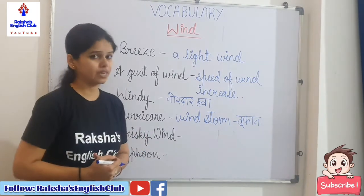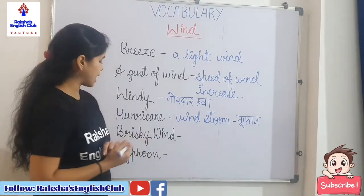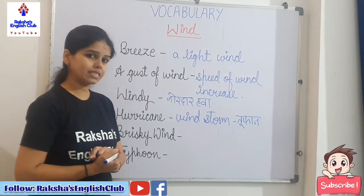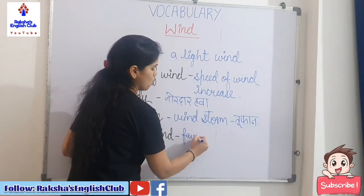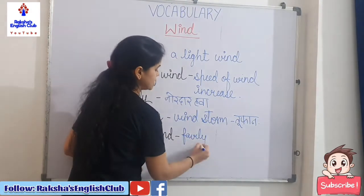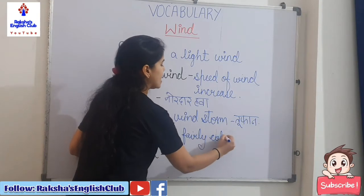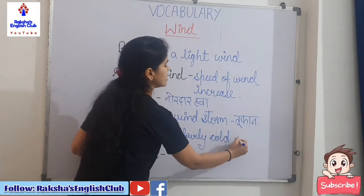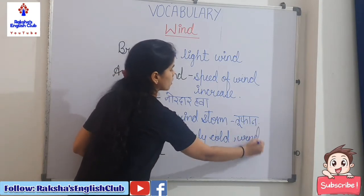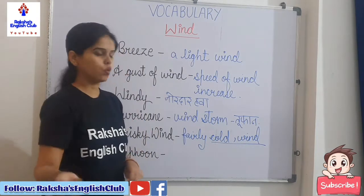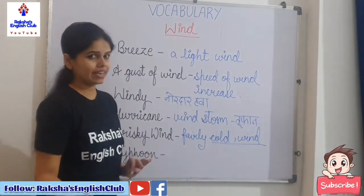Then brisky wind. What do you understand by brisky wind? When there is fairly cold weather — thand hi pad rahi hai — and the wind is blowing with the cold. It's called brisky wind. You can relate it with the current weather.